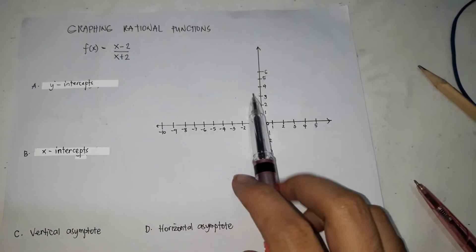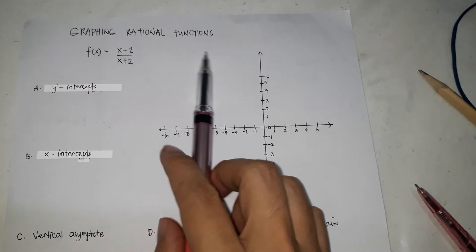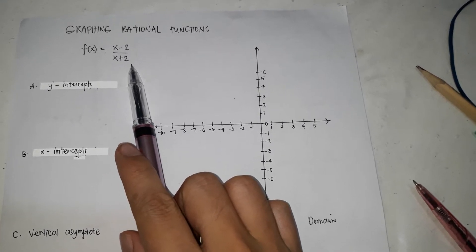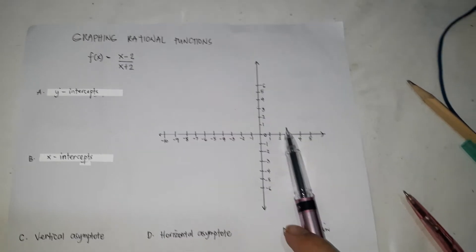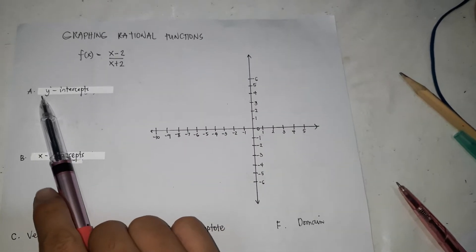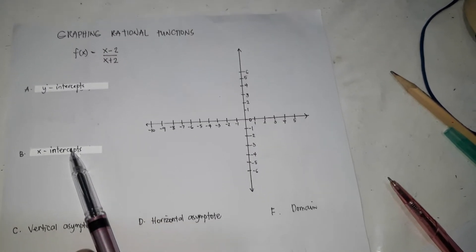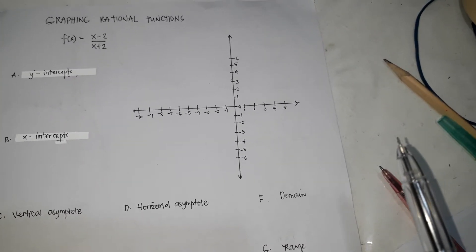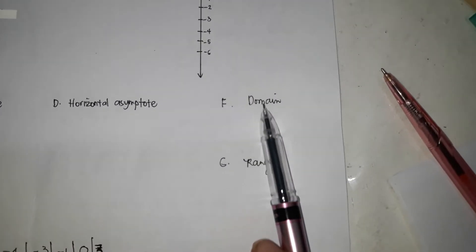Graphing rational functions. We have f of x equals x minus 2 over x plus 2 as our given function. We're going to graph that by identifying the y-intercept, the x-intercept, the vertical asymptote, the horizontal asymptote, table of values, the domain, and range.